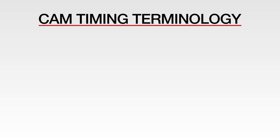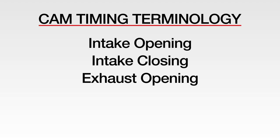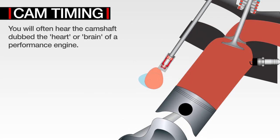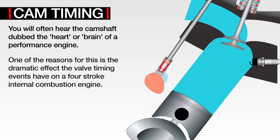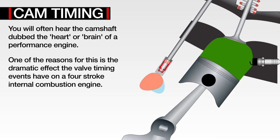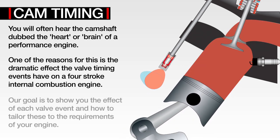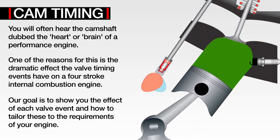In this Technology Explained video, we're going to uncover the mystery behind cam timing. We will cover important cam timing terminology including intake opening, intake closing, exhaust opening, overlap, and exhaust closing. You will often hear the camshaft dubbed the heart or brain of a performance engine, due to the dramatic effect the valve timing events have on a four-stroke internal combustion engine. Our goal is to show the effect of each valve event and how you can tailor these to the requirements of your engine.